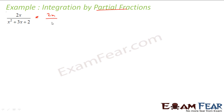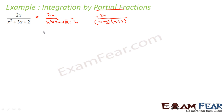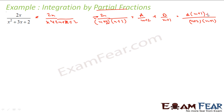x² + 3x + 2 can be written as x² + 2x + x + 2, which factors as (x + 2)(x + 1). Now I write the partial fraction decomposition as A/(x + 2) + B/(x + 1). Multiplying through gives A(x + 1) + B(x + 2) in the numerator.